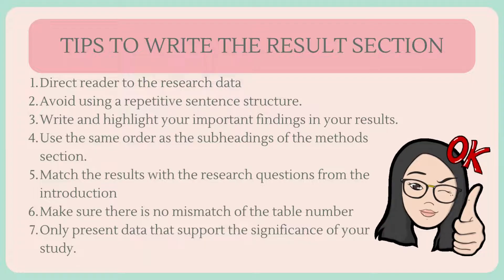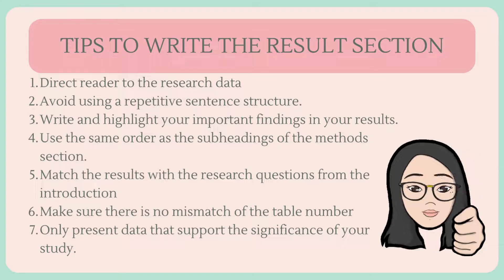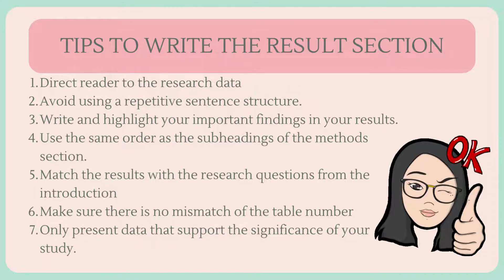Tips to write the results section: Direct the reader to the research data and explain the meaning of the data. Avoid using a repetitive sentence structure to explain a new set of data. Highlight your important findings in your results. Use the same order as the subheadings of the methods section. Match the results with the research questions from the introduction — your results should answer your research questions. Make sure there is no mismatch of the table number or figure number in text and in figures or tables. Only present data that support the significance of your study, and provide additional data in tables and figures as supplementary material.